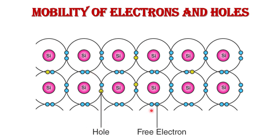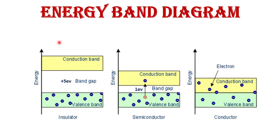When one of the free electrons leaves its lattice position, a hole is created. This hole, having positive charge, attracts a neighboring negative-charge electron. The electron moves into that hole, creating a new hole elsewhere. That new hole again attracts another electron, and in this way electrons and holes move through the material.